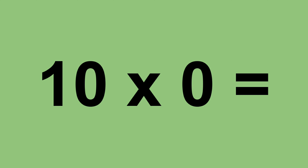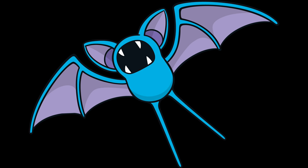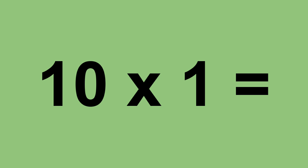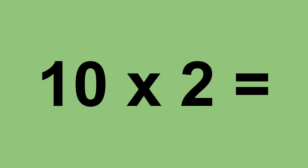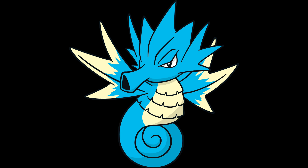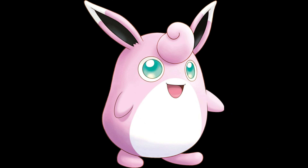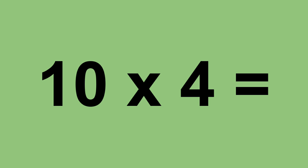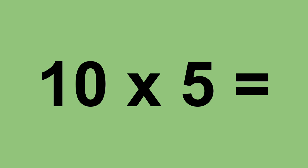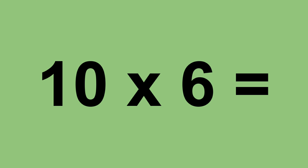Ten times zero equals zero. Ten times one equals ten. Ten times two equals twenty. Ten times three equals thirty. Ten times four equals forty. Ten times five equals fifty. Ten times six equals sixty.